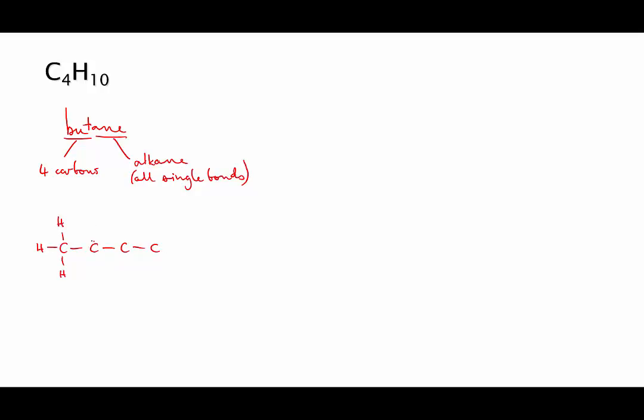In this video we're going to look at what an isomer is. Consider the molecule butane. The parent part of the name, but, tells you that there are four carbons and the suffix tells you that all the bonds are single. So we can draw the structure. And the formula is C4H10.